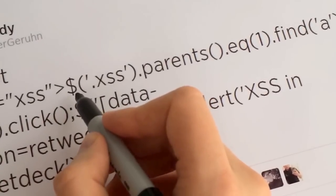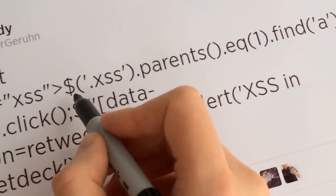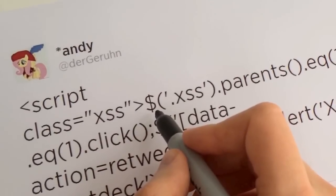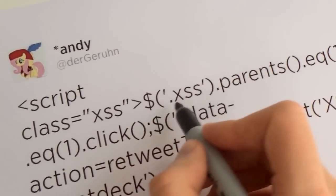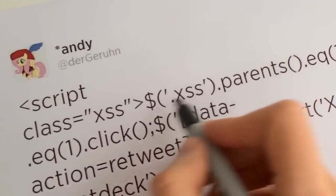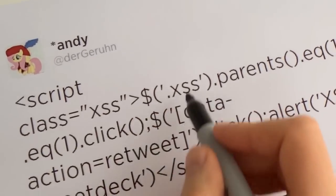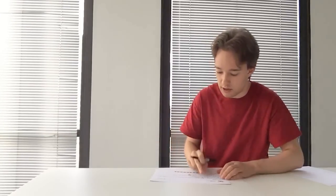First command. Dollar sign. That dollar sign is jQuery. It's a JavaScript plugin designed to make developing so much easier and so much faster, and it works. And what this command here, just this first bit, means is, find me anything on this page with the class of XSS. Well, that's this script tag. That's this bit right here. It's saying, find me. Find myself. Find this little bit of code.